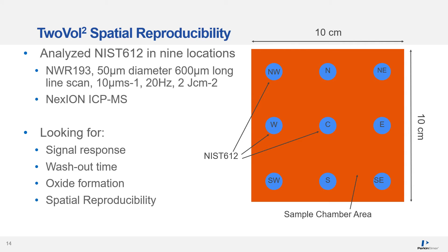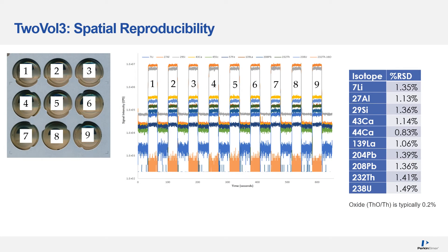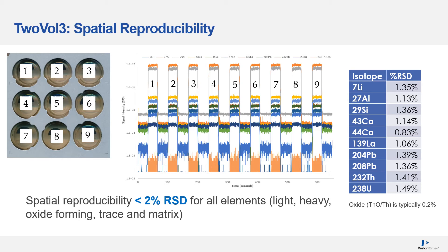The way we tested a sample chamber's spatial reproducibility was by inserting NIST 612 glass reference materials around the corners of the chamber, in the center, and at the sides. We ablated for the same amount of time on each puck, and the average value for each ablation was compared across the mass acquisition range. Shown here are the ablation profiles for the 9 ablation lines. Spatial reproducibility is less than 2% RSD for all elements across the mass range — essentially limited by the heterogeneity within the NIST glass. For the Tuval-3 test, the same experiment was performed, again showing less than 2% RSD for all elements, and ablation-to-ablation time was cut in half.